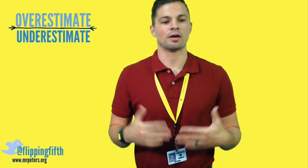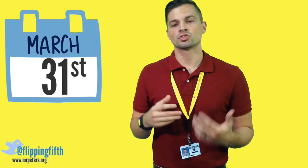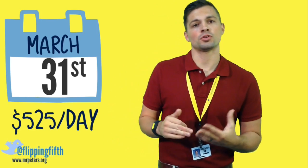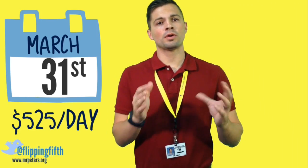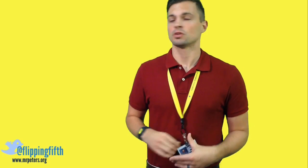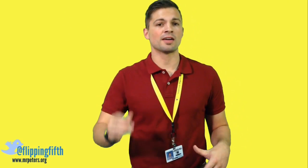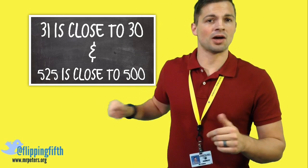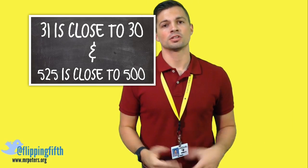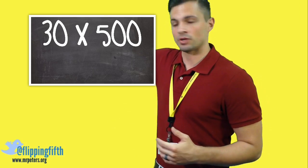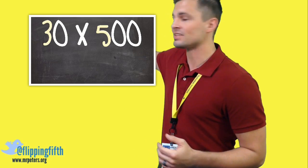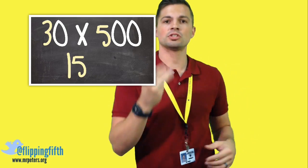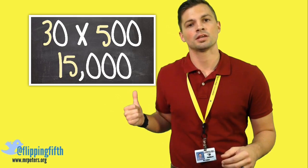Let's look at this problem: a store wants to see how much money they can make in March. March has 31 days and they average about $525 a day. We want to estimate the total. The 525 rounds down to 500, and the 31 rounds down to 30. Now we take 5 times 3, which is 15, and then we count the zeros: two zeros on one side and one zero on the other, giving us three total zeros. So we add those to the end and get 15,000.